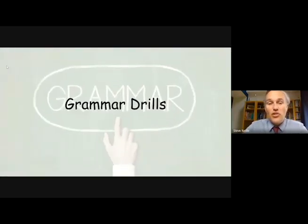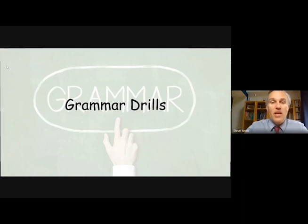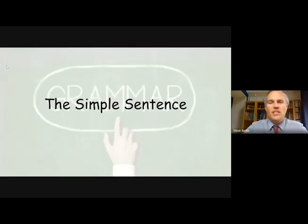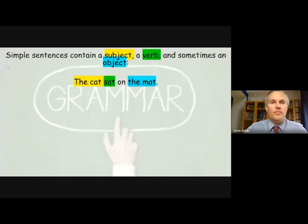Hi, it's time for another session of our grammar drills and today we're going to be looking at sentence types. The first sentence we're going to look at is the simple sentence. Now simple sentences are also called main clauses and they contain a subject, a verb, and sometimes an object.